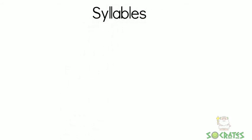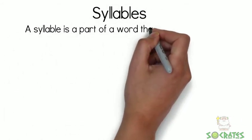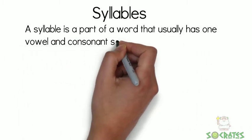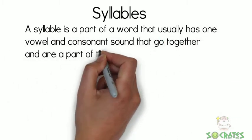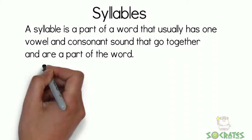Syllables. A syllable is a part of a word that usually has one vowel and consonant sound that go together and are part of the word.